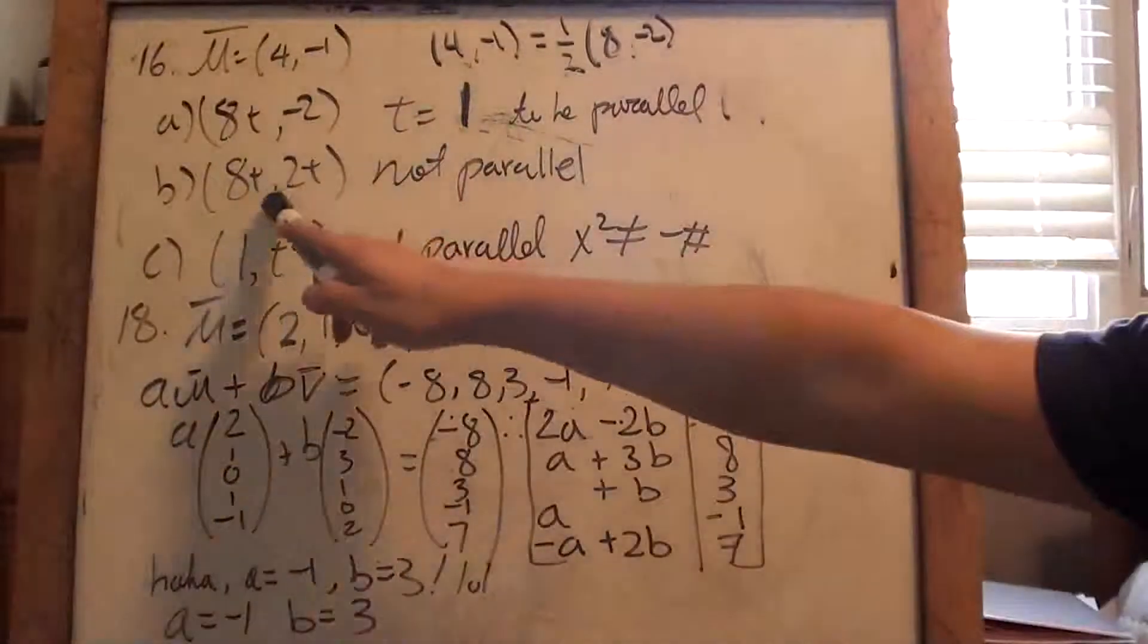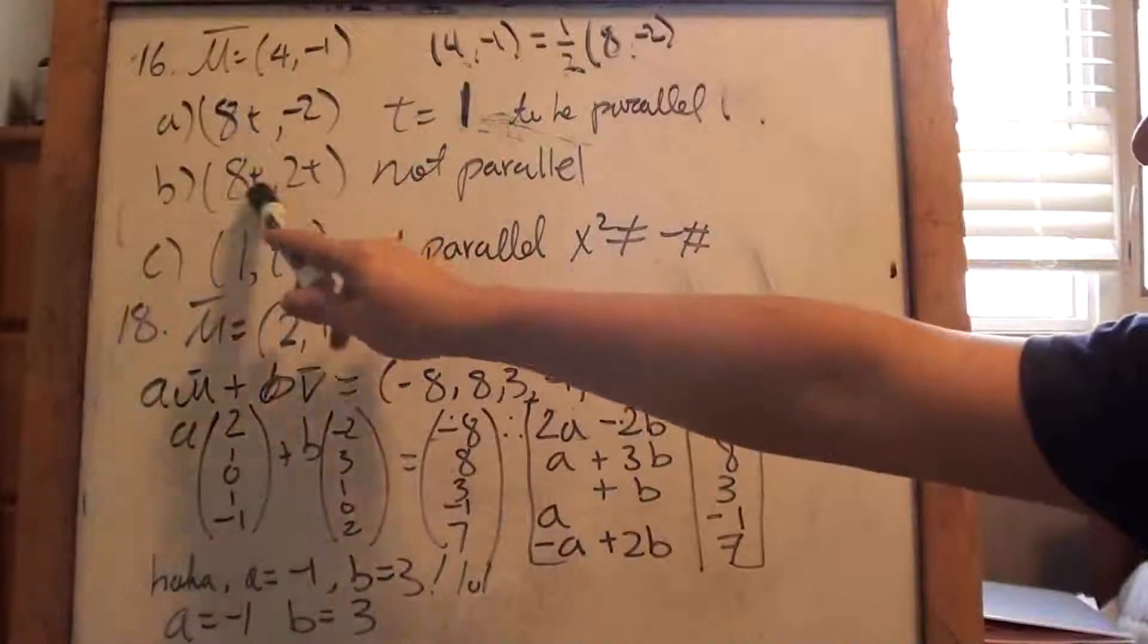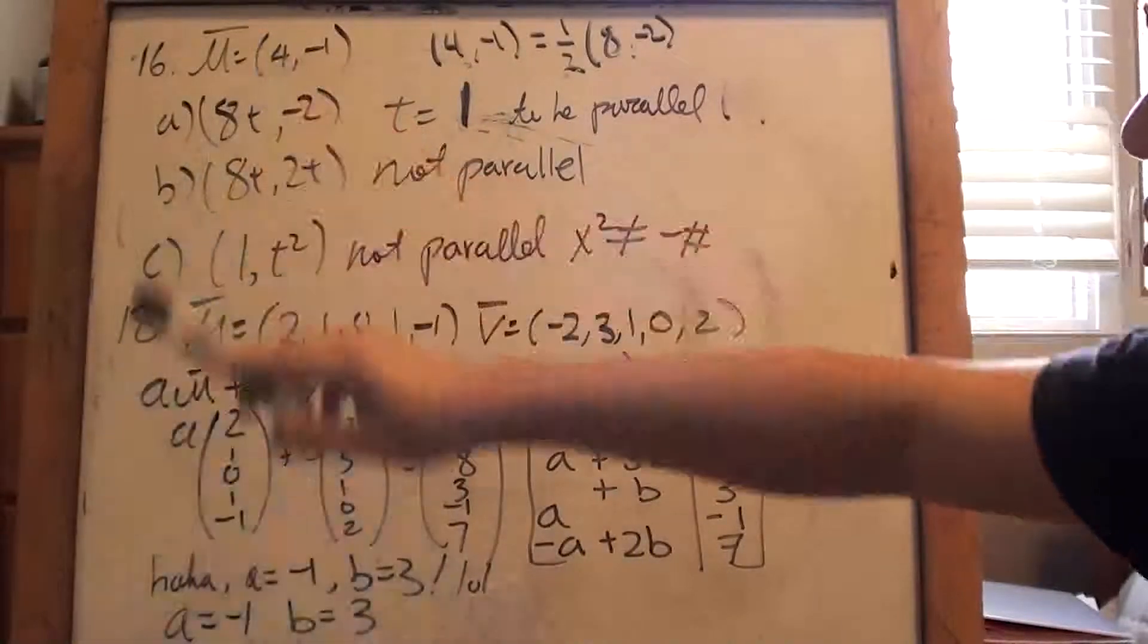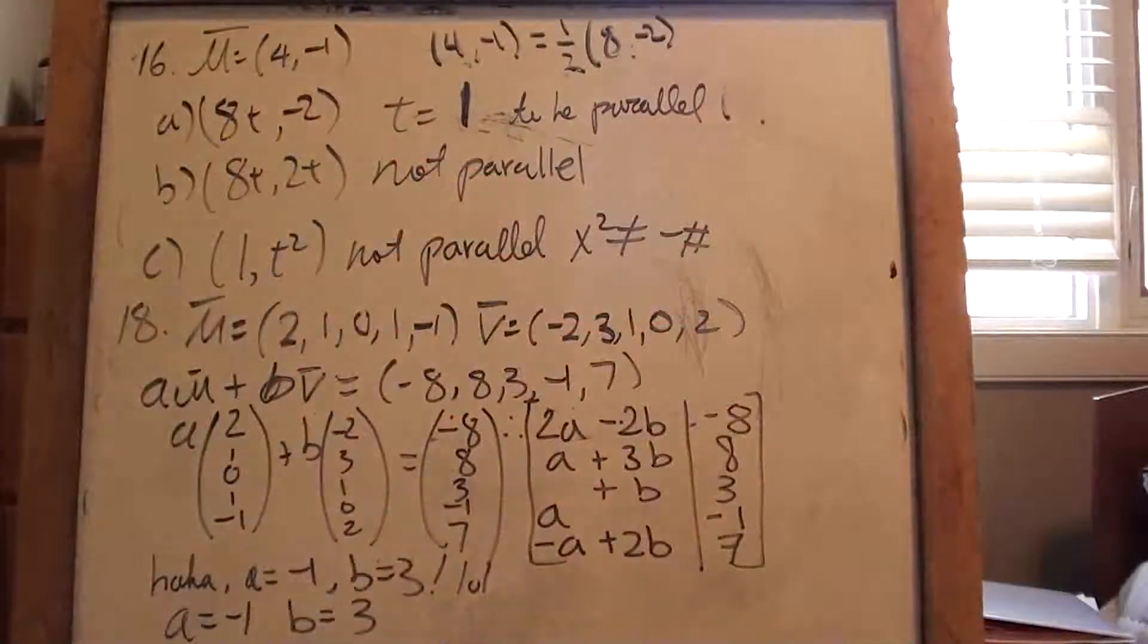So I can't think of any t value where it would get the first entry positive and the second entry negative. Can't be done. Don't think so. I don't think so. That's why I say it's not parallel.